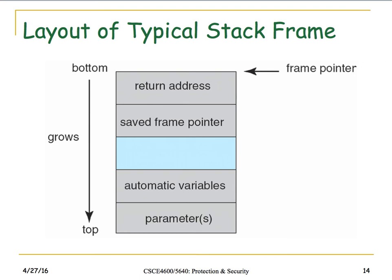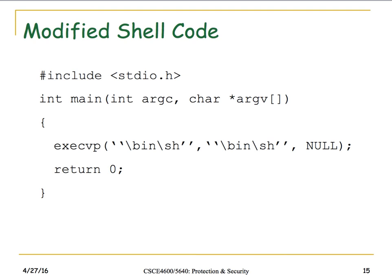A typical stack layout works like this: when calling a function, first parameters are pushed, then automatic variables used inside the function, then the frame pointer from the calling location, then the return address. Inside the subroutine the frame pointer points to where the return address is; when returning from the function these are undone. We can force this to go out of reference as well.